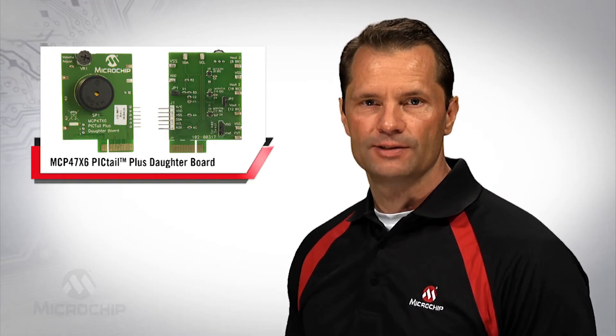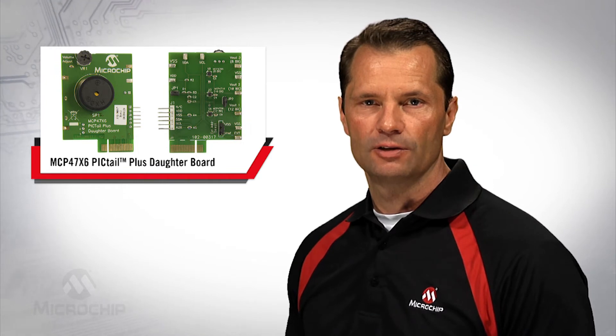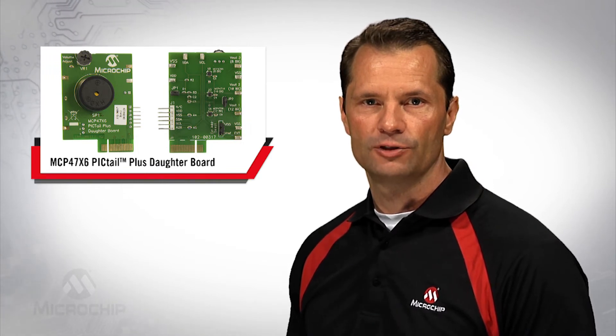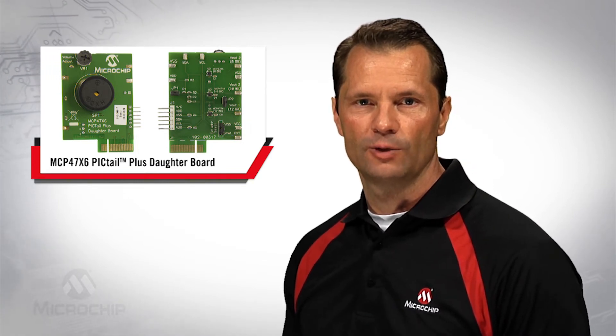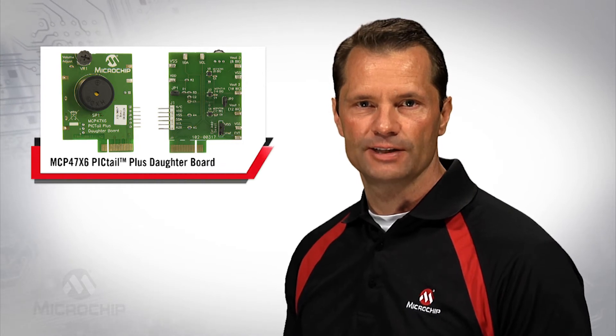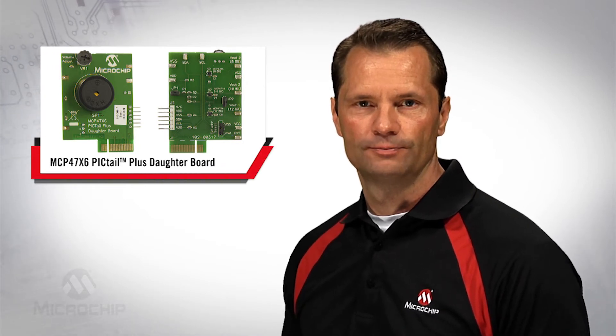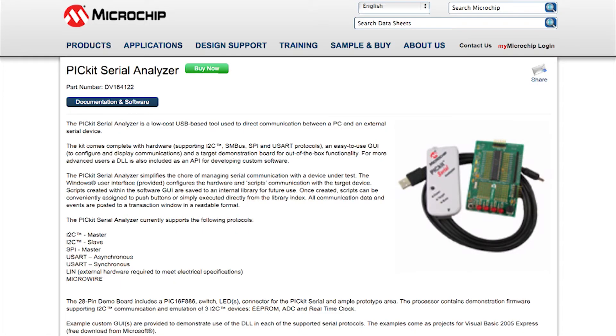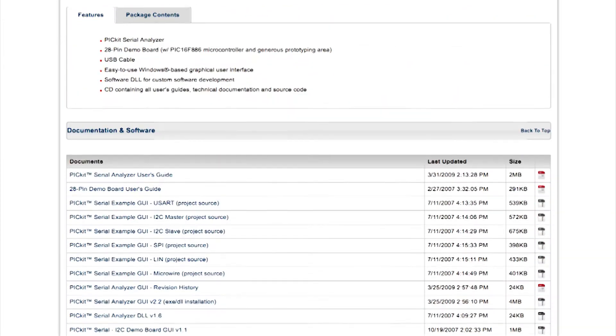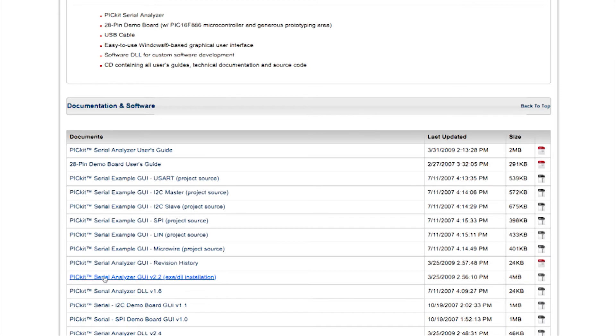The following steps describe how to set up and use the PICTEL Serial Analyzer PC graphical user interface, or GUI, to evaluate the MCP47X6 PICTEL Plus daughter board. First, we need to install the graphical user interface. It is best to install the software directly from the PICTEL Serial product page to ensure you have the latest version. Once on the product page, scroll down and click on the PICTEL Serial Analyzer GUI and follow the instructions to complete the installation.